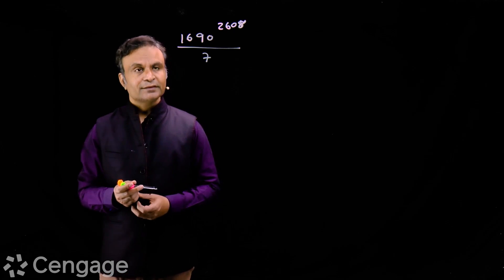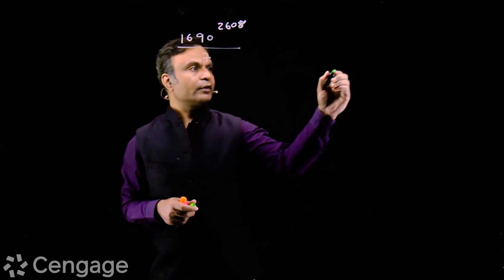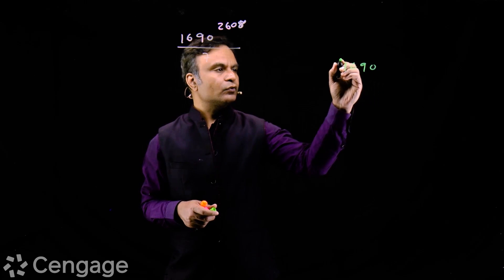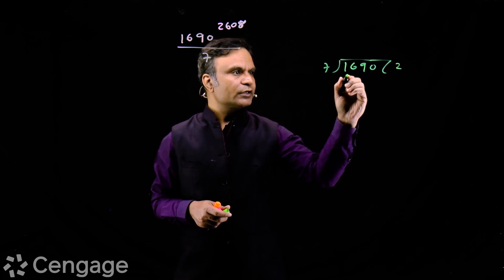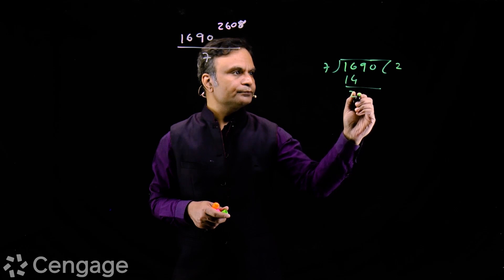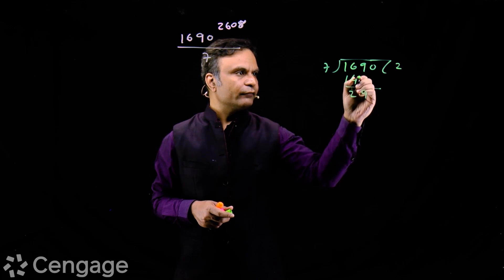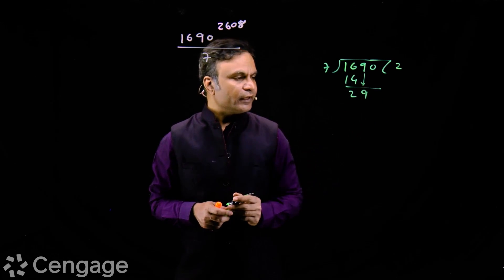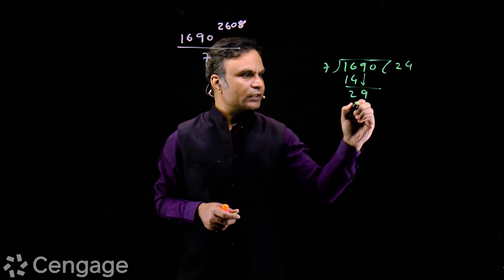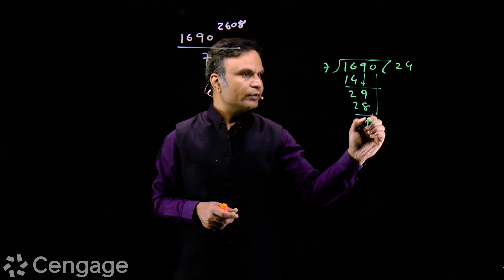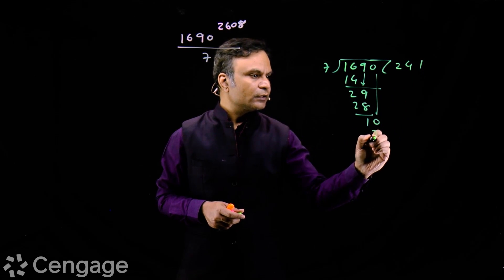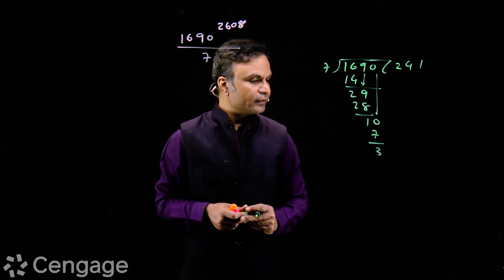We first divide number 1690 by 7. So we have 7 times 2 is 14 with remainder 2, then we have 9 from here, then we have 7 times 4 is 28, then we have 1 here, then we take 0 from here and 7 times 1 is 7. So remainder is 3.